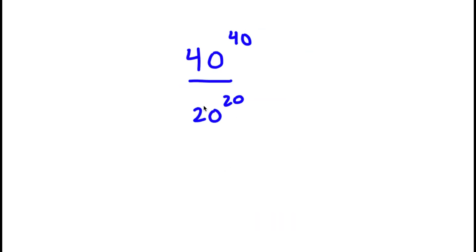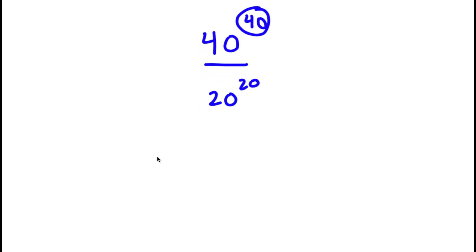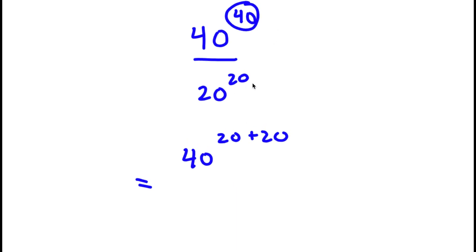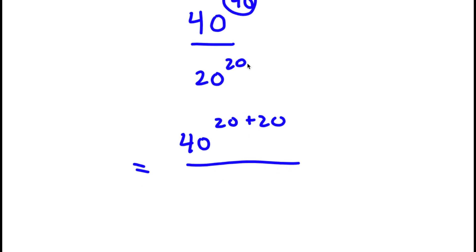In this problem, I have 40 to the power of 40 over 20 to the power of 20. To solve this, I'm going to first rewrite the exponent 40 as 20 plus 20. So now I have 40 to the power of 20 plus 20 over 20 to the power of 20.